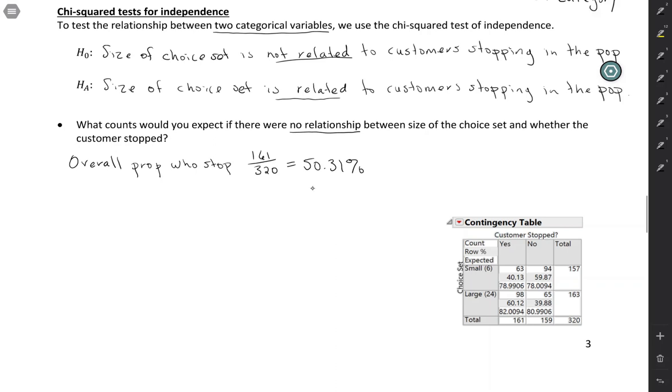And you would expect that that would apply to both of your groups. So let's say that we wanted to look at the proportion who stopped in the small choice set group. So we would expect that out of those 157, about half of them would stop.